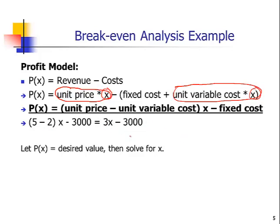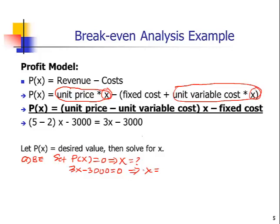Now that we have the profit formula, for any value of X we could calculate the profit. In addition, for any profit level we want, we could figure out the sales volume needed to achieve it. For the break-even volume, we ask: what is X when profit equals 0? We set P(X) = 0, so 3X − 3,000 = 0, which gives us X = 1,000 units.